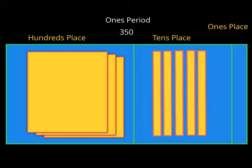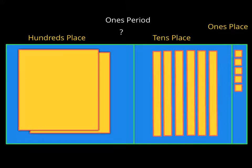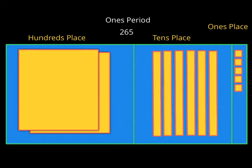Now let's go the other way around — I'm going to give you the blocks, and you're going to try to write the number in standard form. So what number is represented here? Count the blocks in each place. That's 200, then 10, 20, 30, 40, 50, 60, then 1, 2, 3, 4, 5. So the answer is 265.